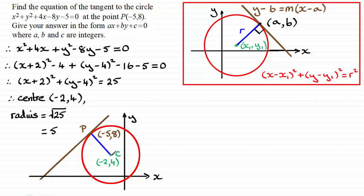So, I need to establish the gradient of PC next. And we do that in the usual way, that the gradient of CP is the difference in the y-coordinates, 8 minus 4. OK, 8 minus the 4 here. And then that's divided by the difference in the x-coordinates, minus 5, minus, minus 2. And that gives us minus 4 thirds.